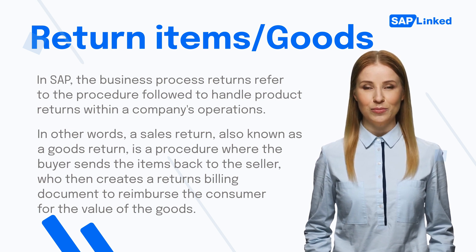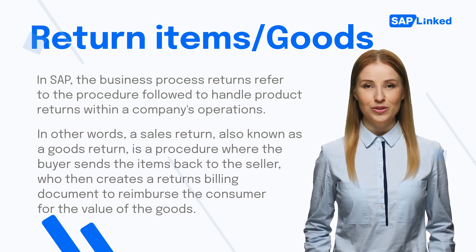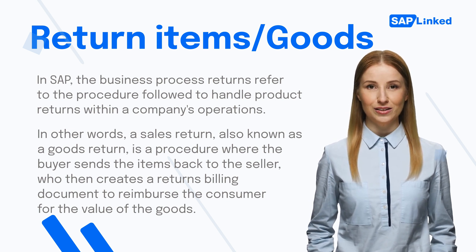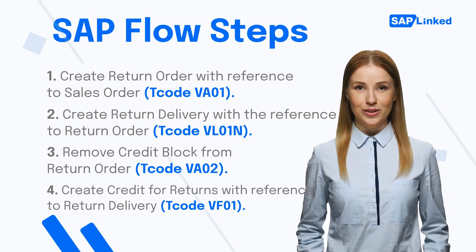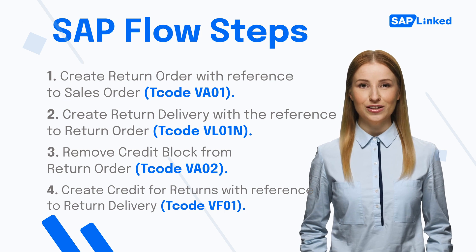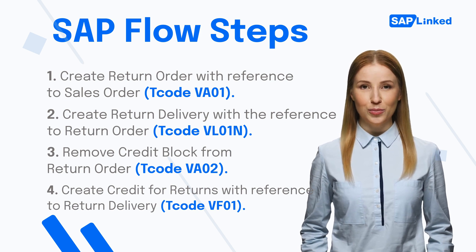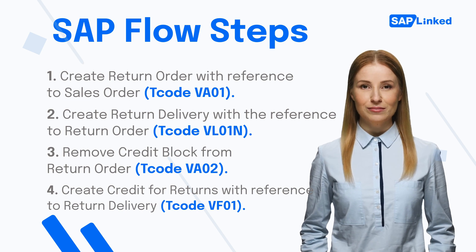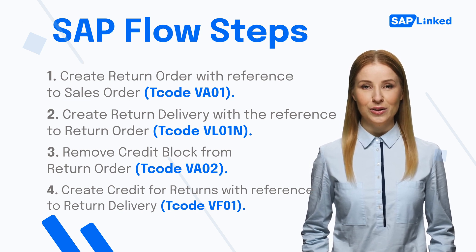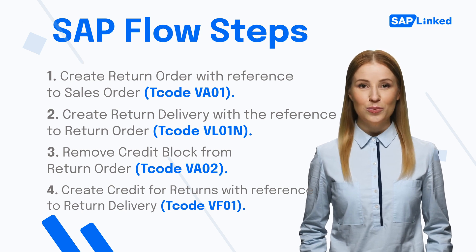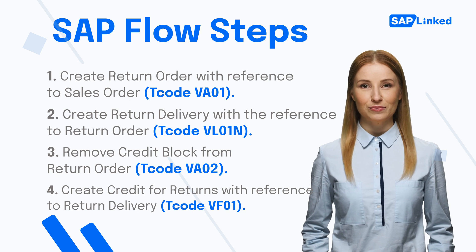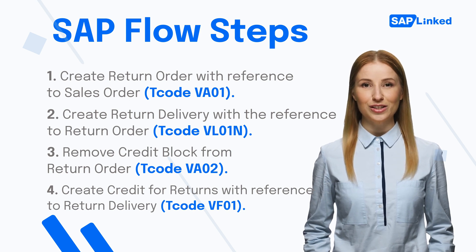To process a return of goods in SAP, there are several steps. The SAP flow steps are: 1. Create return order with reference to sales order. 2. Create return delivery with reference to return order. 3. Remove credit block from return order. 4. Create credit for returns with reference to return delivery.